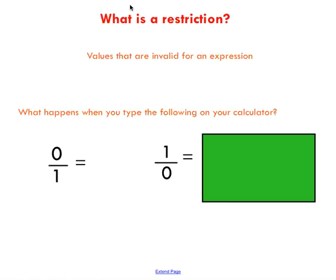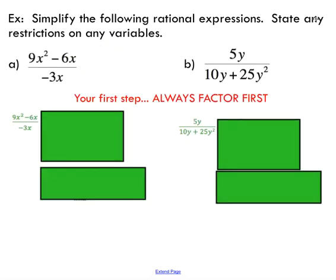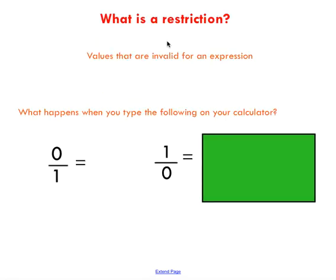Well, very briefly, just a note on restrictions. Some of the problems you're going to see today say, state any restrictions on any variables. A restriction is a value that's considered invalid for an expression. So there's a couple examples of invalid values for expressions. I'm just going to show you one of them here. So think about 0 divided by 1, you take 0 and divide it, you get 0. Okay?